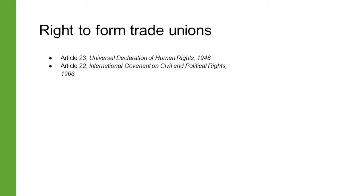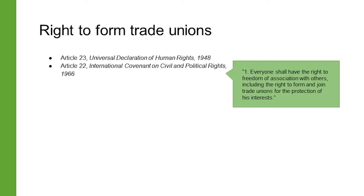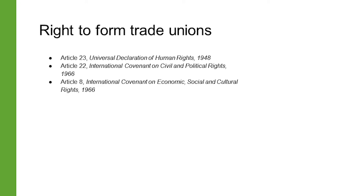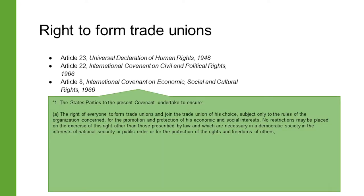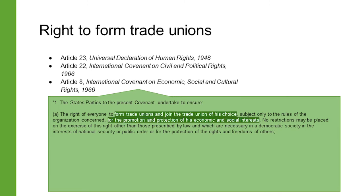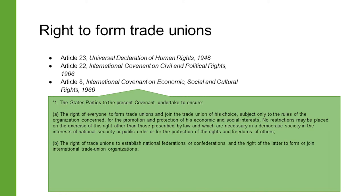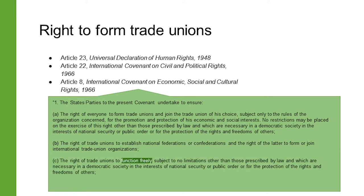Clause 1 of Article 22 of the International Covenant on Civil and Political Rights lays out a similar general principle. Article 8 of the International Covenant on Economic, Social and Cultural Rights of 1966 requires states to ensure the right of everyone to form and join trade unions to promote and protect their economic and social interests, their rights to establish national federations or confederations, the rights of national federations to form or join international trade union organizations, and the rights of these union organizations to function freely. It also recognizes the right to strike.